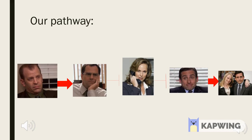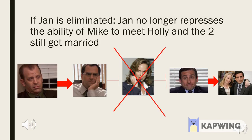We will go over examples of what a mutation would look like. In this single mutation where Jan is eliminated, the outcome remains the same, because Jan inhibited Mike from being with Holly, but since David was there to inhibit Jan when there was no mutation, there is nothing keeping Mike from being with Holly still.